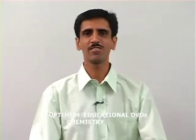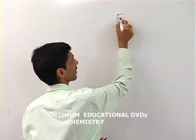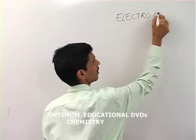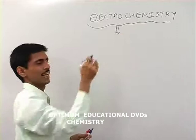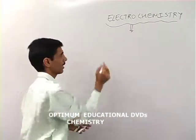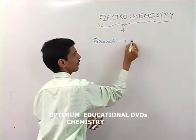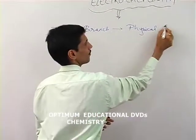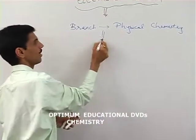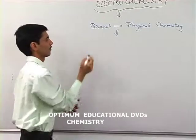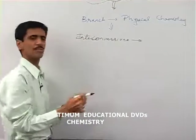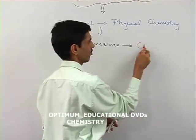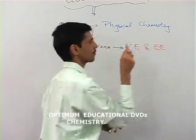We start with a new chapter of chemistry, and that is about electrochemistry. First of all, we try to understand what exactly the chapter is all about. Electrochemistry is a branch of chemistry — more specifically, a branch of physical chemistry — and it deals with the interconversion of two types of energies: chemical energy and electrical energy.